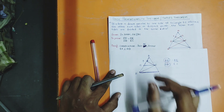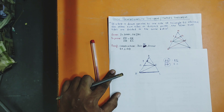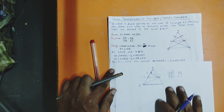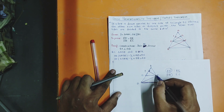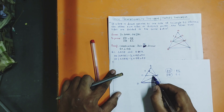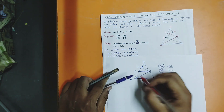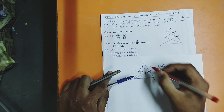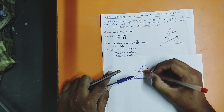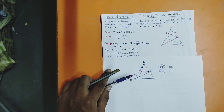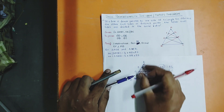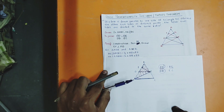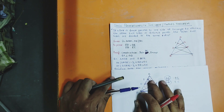I want AD by DB, so I will apply the concept of area. I will apply the area formula for two triangles. What is the area formula for triangle ADE? It is half into base ADE into height EF — this is the height.